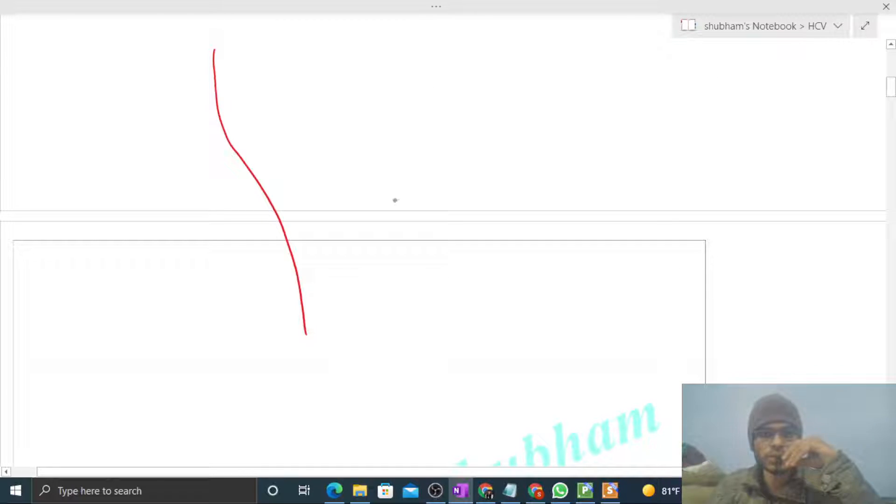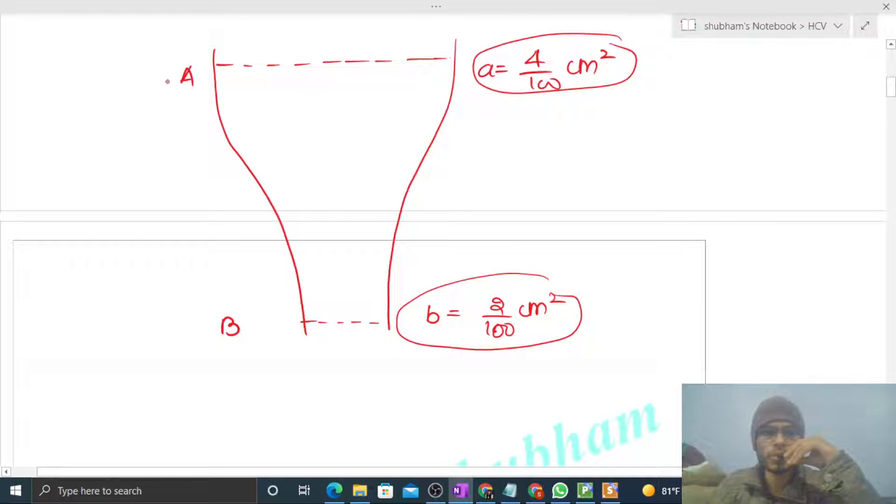So in this case where you have a tube that is vertical something like this, you have a point A and you have a point B. Cross-sectional area at point A, that is capital A, is 4/100 centimeter squared, and the cross-sectional area at point B, let's say small b, that is 2/100 centimeter squared. Now your separation between point A and point B, that is given as 15/16 centimeter, and your volume flux, that is given as 1 centimeter cubed per second.